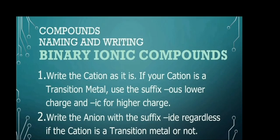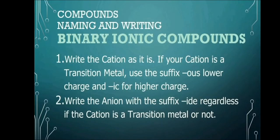How about naming and writing binary ionic compounds? There are certain rules to follow. Number 1 is write the cation as it is. If your cation is transition metal, use the suffix -ous when it has a lower charge, and -ic for a higher charge. Number 2, write the anion with the suffix -ide, regardless if the cation is a transition metal or not.